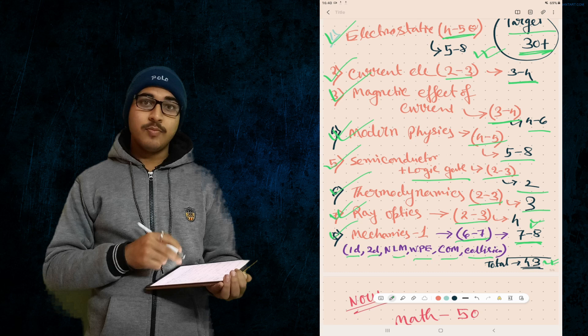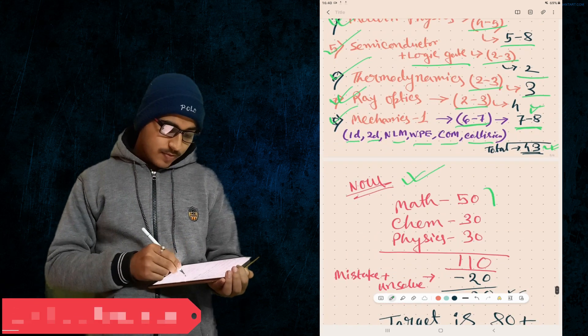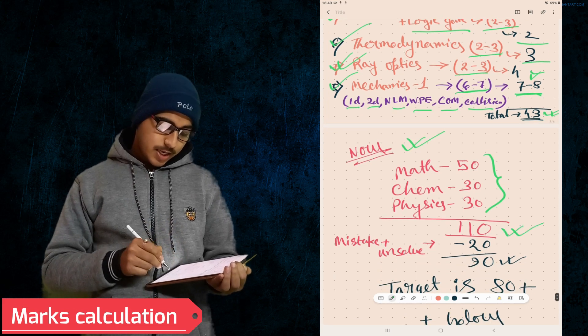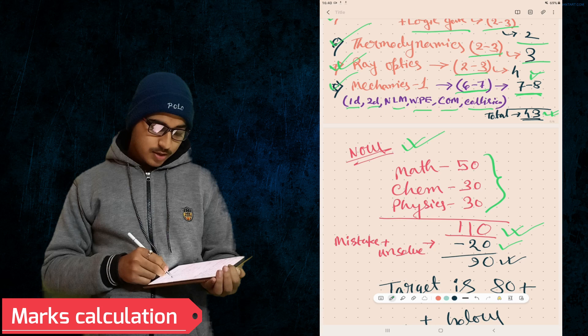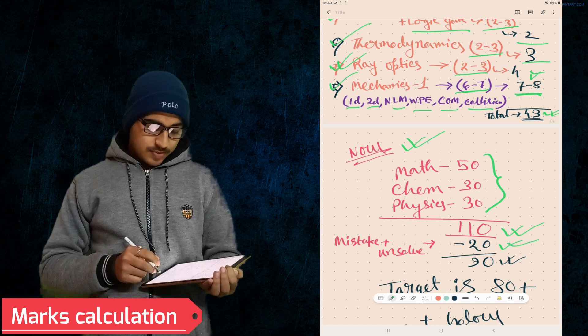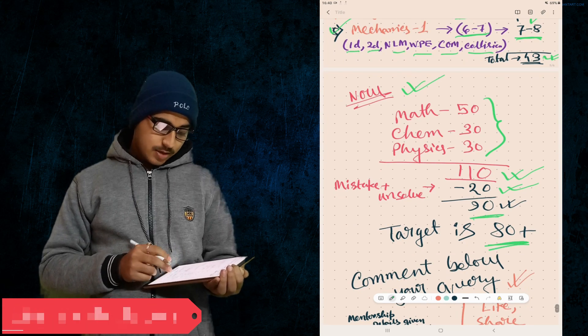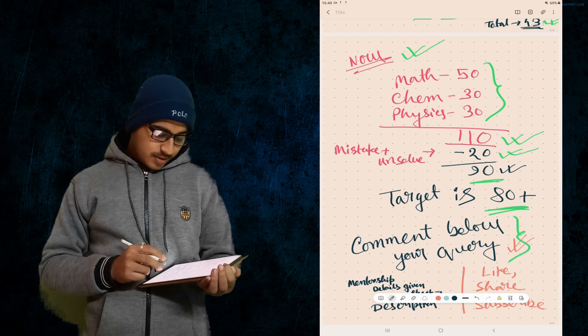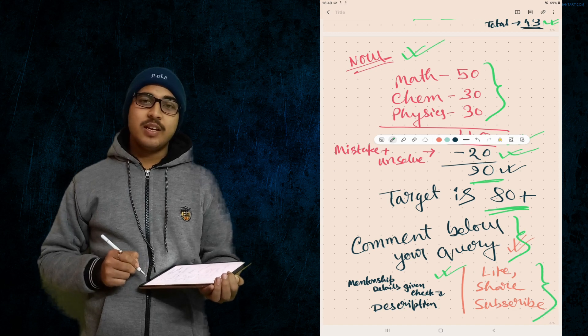Total marks count: Math 50, Chemistry 30, Physics 30, we're assuming total 110. If we did some mistakes and can't solve some questions, subtracting 20 marks here also, so 90 marks. Our target is 80 plus marks. That's it for today. Comment below your query. Mentorship tutorials are given in the description. Like, share, and subscribe to our channel. See you soon in the next video. Till then, stay tuned.